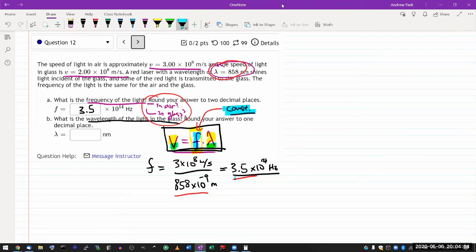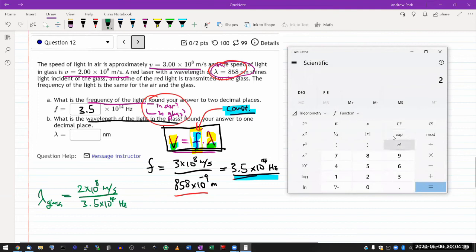So let me just use this frequency here and calculate the wavelength in glass. That's going to be solving that for lambda: wave speed this time, two times 10 to the eight meters per second, divided by the frequency, the same one I had before, 3.5 times 10 to the 14 hertz or one over second. So two times 10 to the eight divided by 3.5 times 10 to the 14, let me multiply that by 10 to the nine so that I have something in the units of nanometers. So 571.4 nanometers.